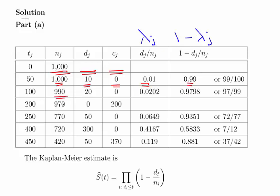The next period starts with 990 bulbs and 20 of them break. So 20 divided by 990 gives 0.0202, which is 20 over 990 or equivalently 2 over 99. That's the probability of breaking down. The probability of survival in that period is 0.9798. Then at 200 hours the censoring comes in.